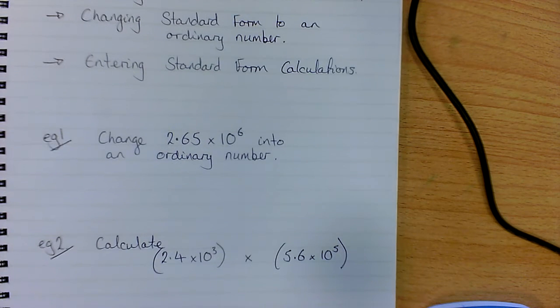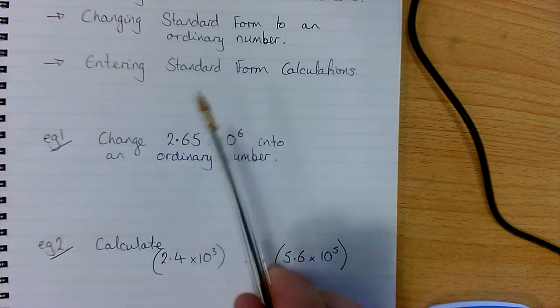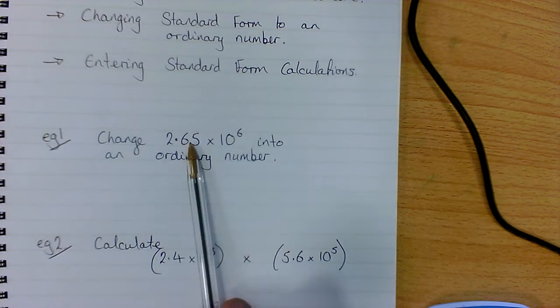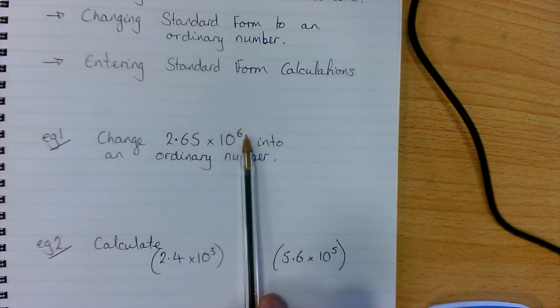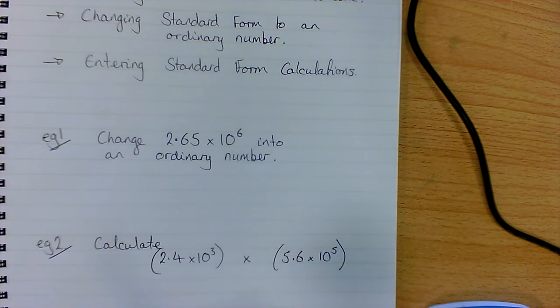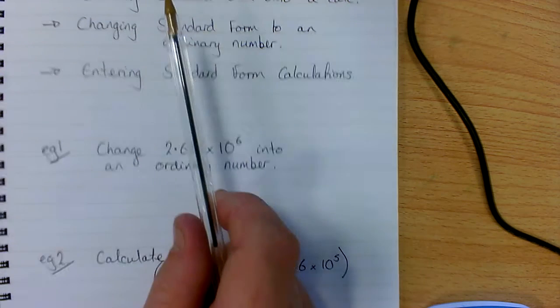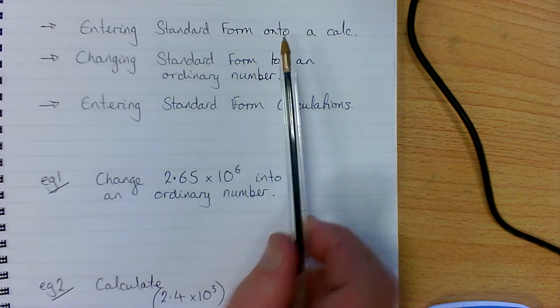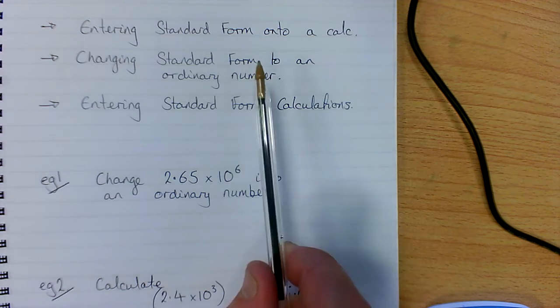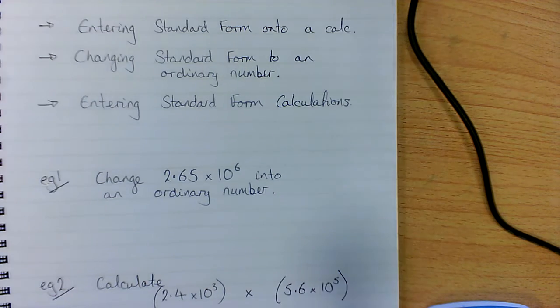The first example says about changing 2.65 times 10 to the power 6 into an ordinary number. This will deal with the first two areas: entering it onto a calculator and changing it.